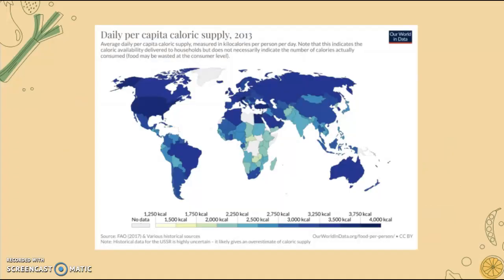Globally, the daily per capita caloric supply is highest in North America, Europe, some parts of South America, Australia, and New Zealand. It is very low in central Africa, some areas of western and southern Asia, southwestern Asia, and some parts of South America as well.